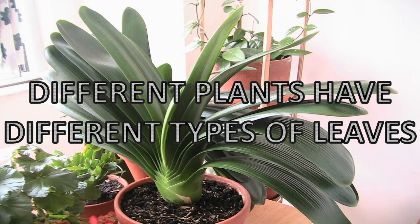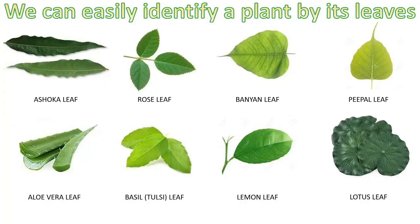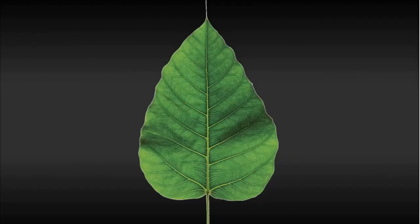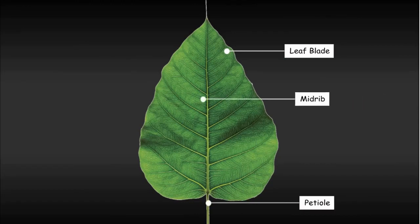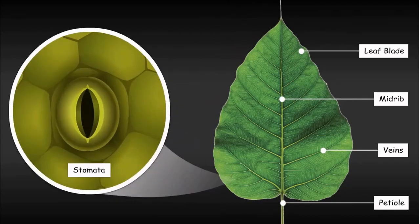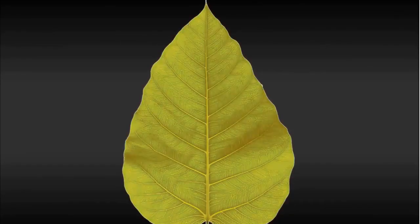Before we wind up today's class, let's take a quick recap of what we have learned. Different plants have different types of leaves, and we can easily identify a plant by its leaves. Even though leaves of different plants have different shapes and sizes, they have a common structure. A leaf is made up of different parts: the leaf blade, petiole, midrib, veins, and stomata.